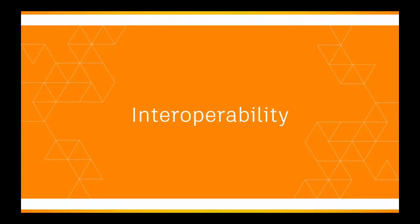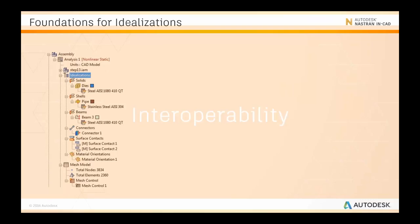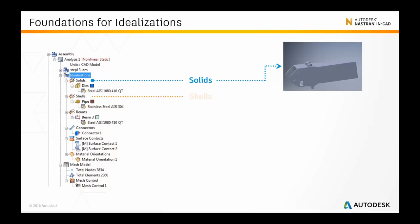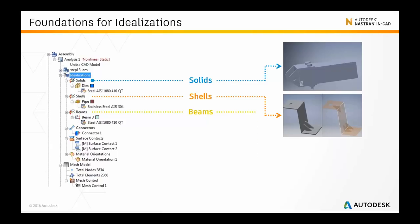When it comes to interoperability, there have been a number of enhancements. One of the first things you'll notice coming from 2016 to 2017 is that the physical properties area has been changed and is now represented as idealizations. Within each analysis study, there is an idealization section representing how geometry is modelled — solids, shells, beams — along with loads, connectors, restraints, contacts, materials, and mesh information. All of this is stored within the idealization, making it more logical, especially for new users to NASTRAN in CAD or simulation in general.